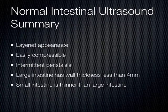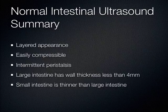To summarize what we've covered so far: normal intestinal ultrasound shows a nice layered appearance, is easily compressible, and you should see intermittent peristalsis. Large intestine wall thickness should be less than 4 millimeters, and small intestine is less than that. Now moving on to the gallbladder.